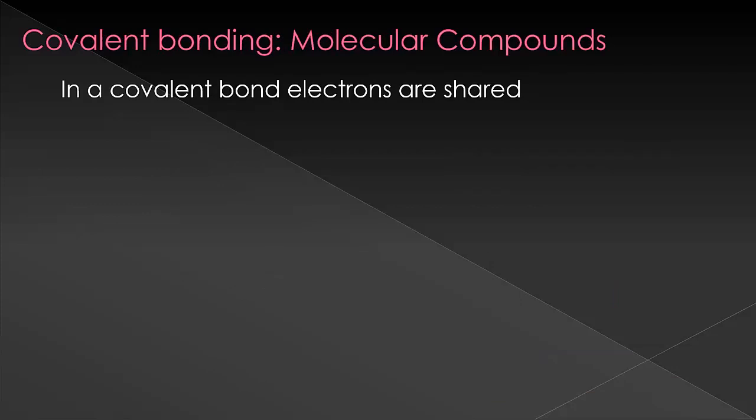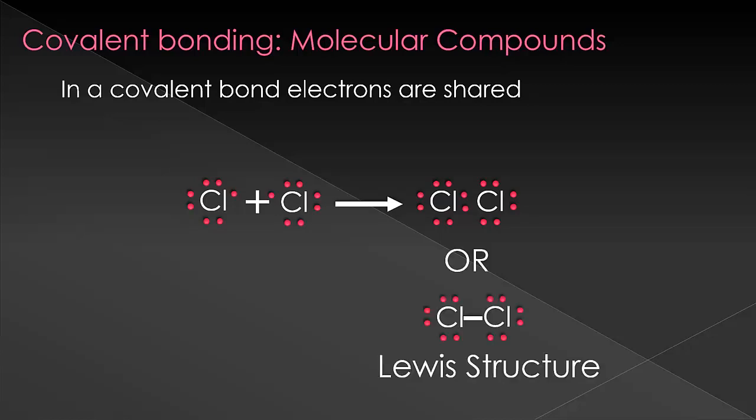In covalent bonding, the molecule will be sharing electron density to make up the octet. We represent these by using Lewis structures, as shown here. Typically, instead of representing all the bonds with shared dots, we'll draw a line, and I would highly recommend that you always do this, as it keeps the structure cleaner when we start getting into very complex structures.